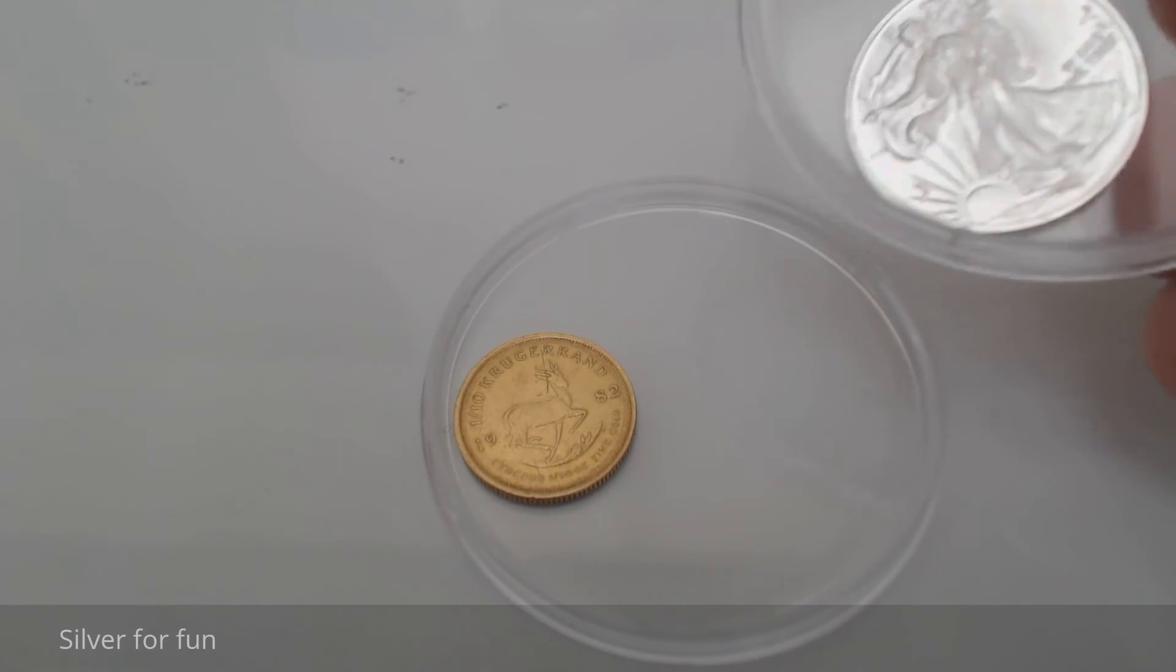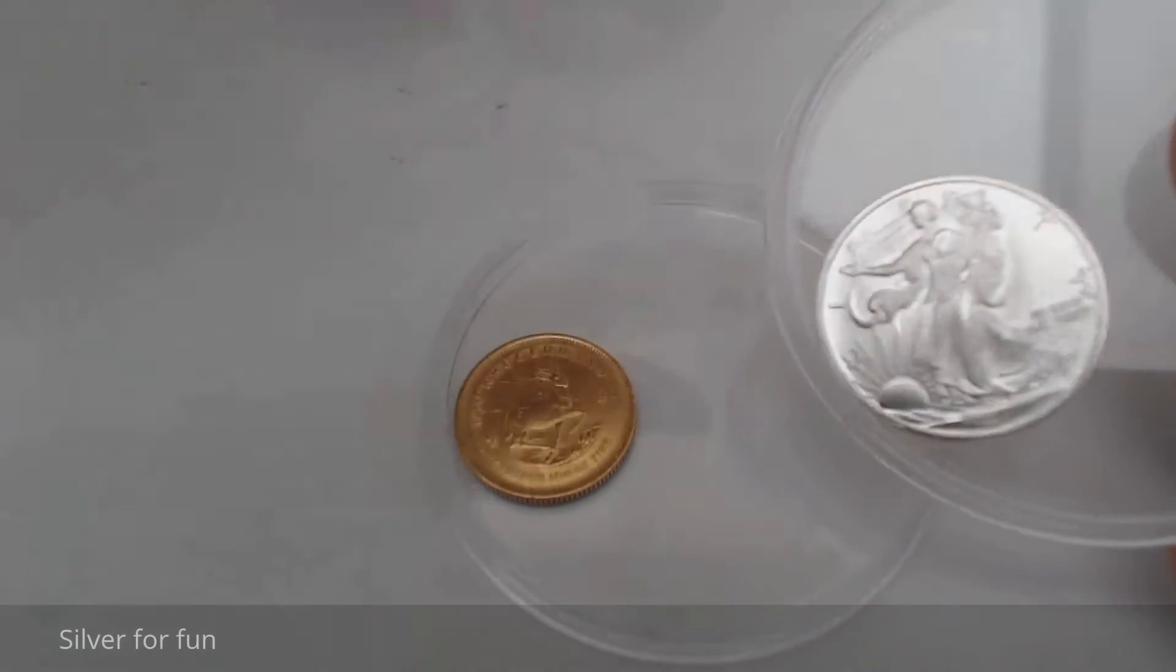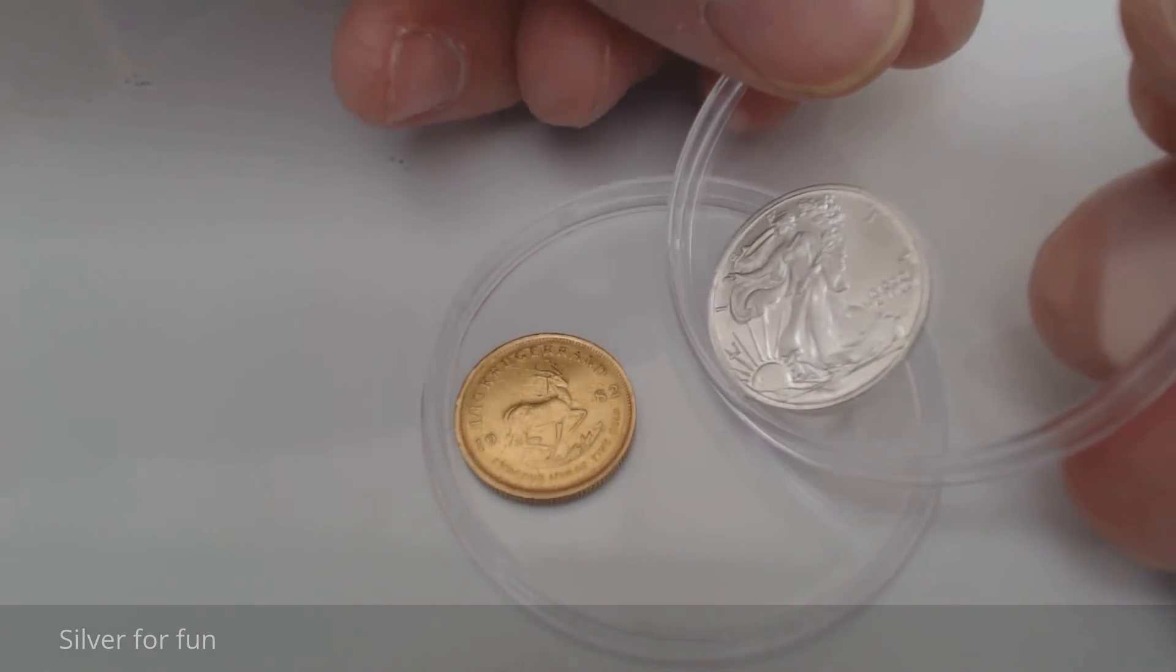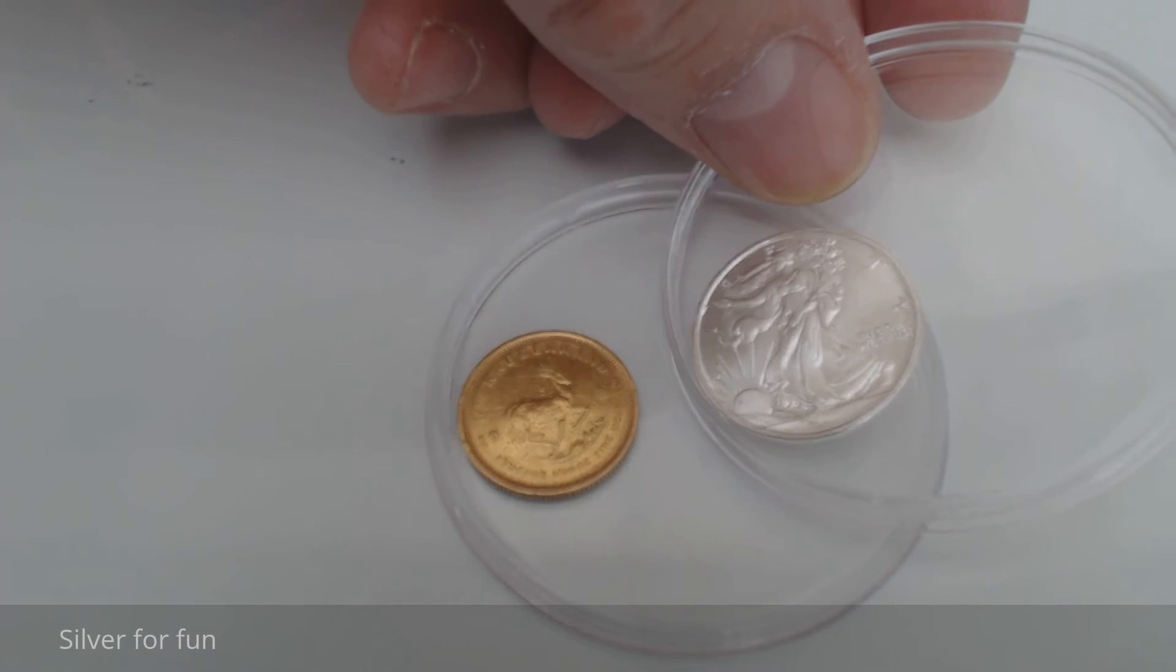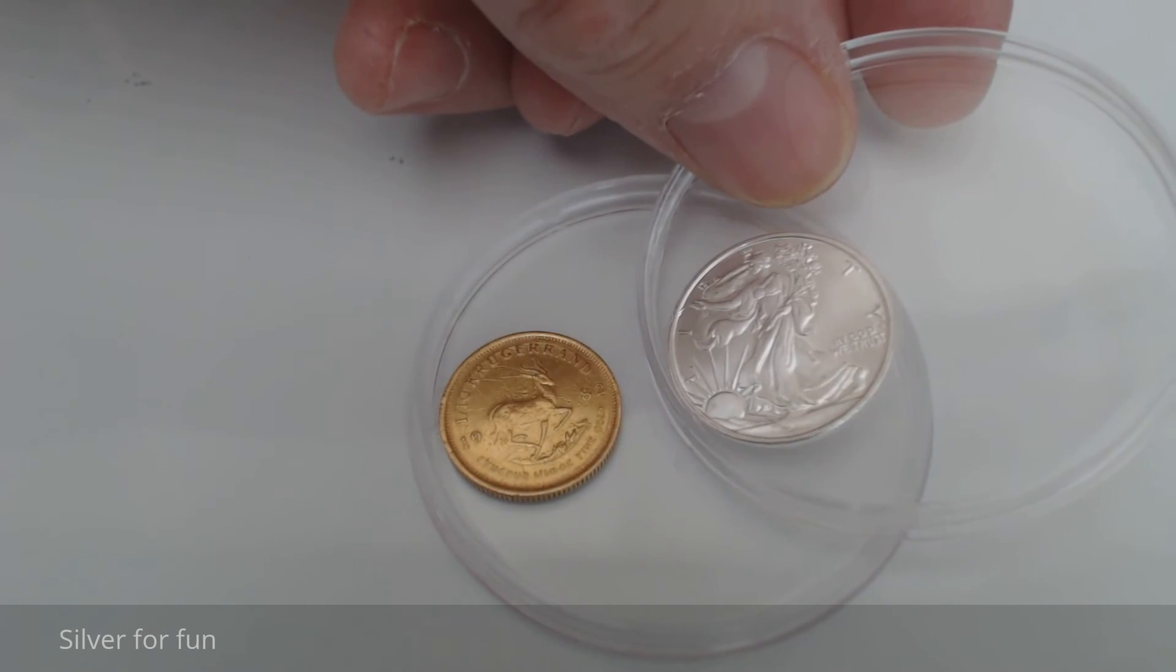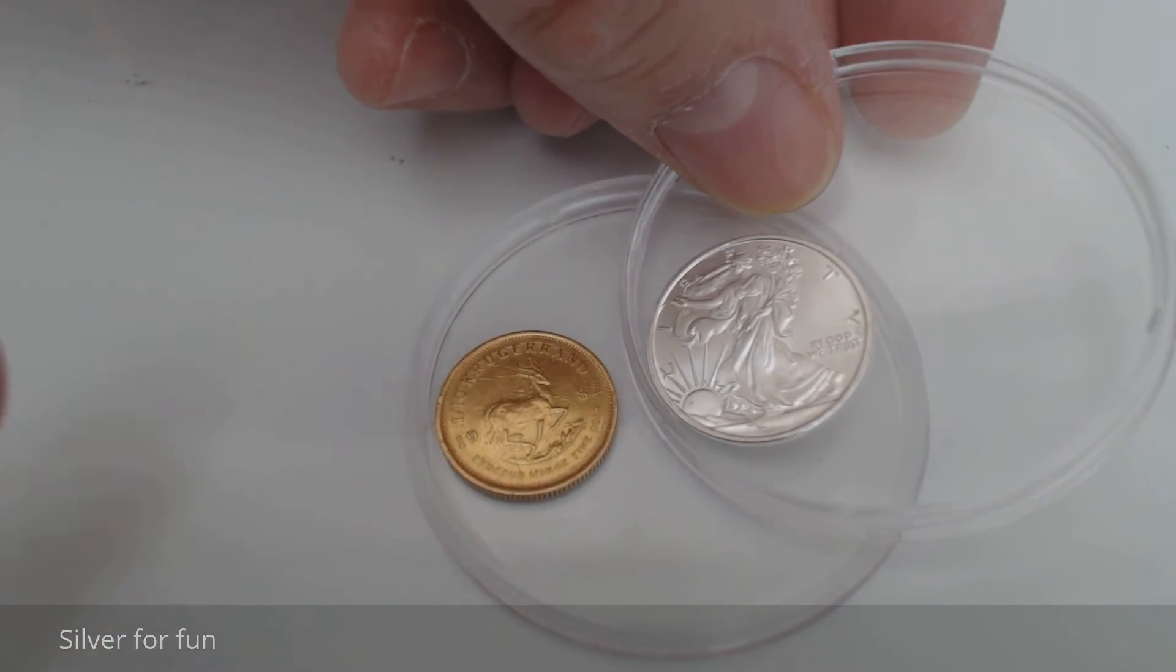And bear in mind that is just a little bit bigger than what a one-tenth ounce would be anyway, but look at the size difference. It's quite a significant difference between gold and silver.